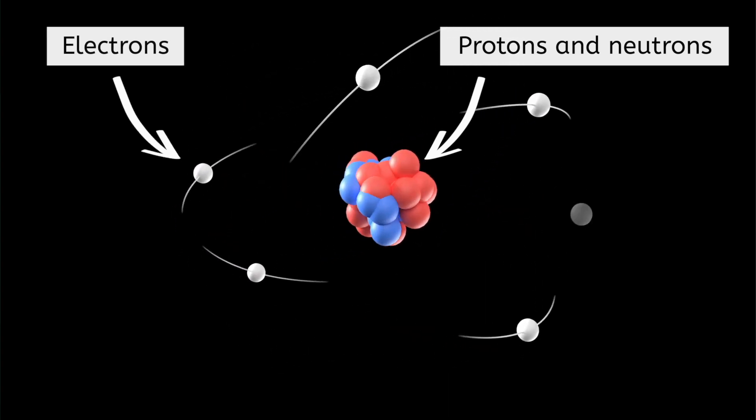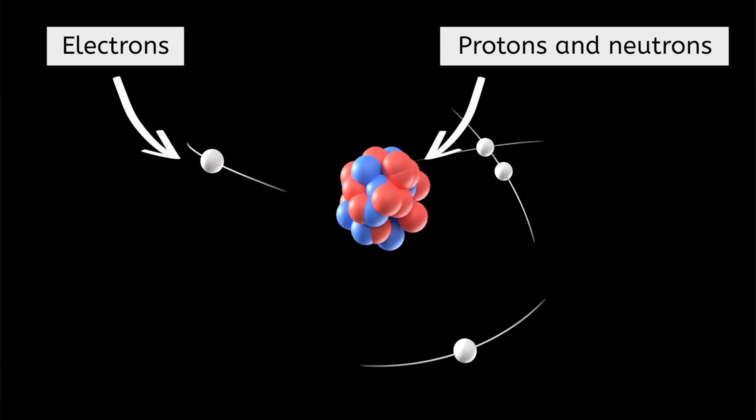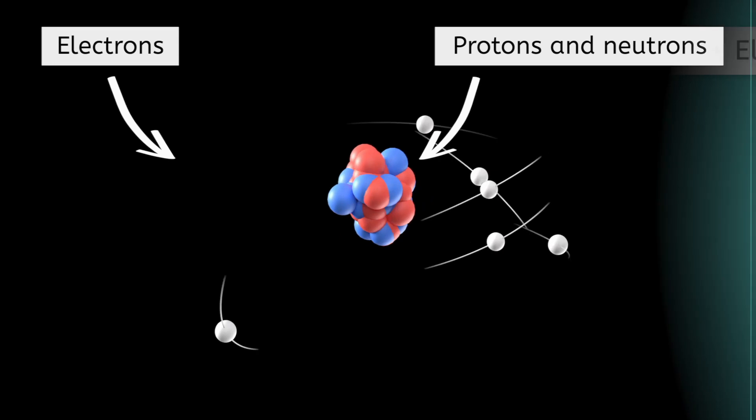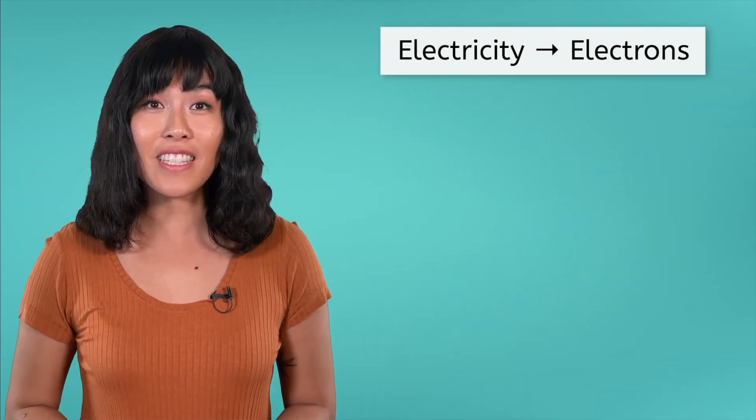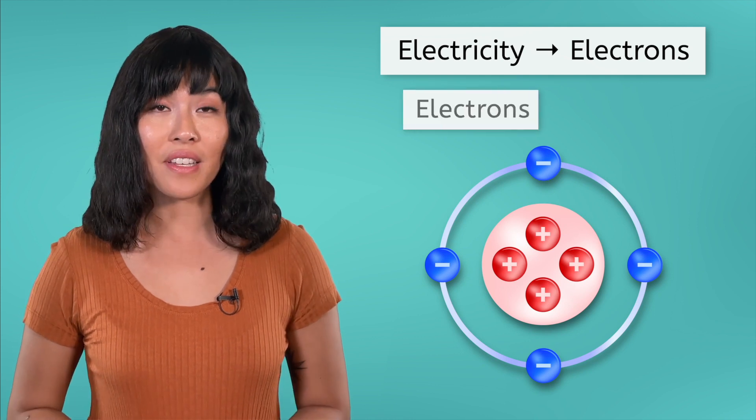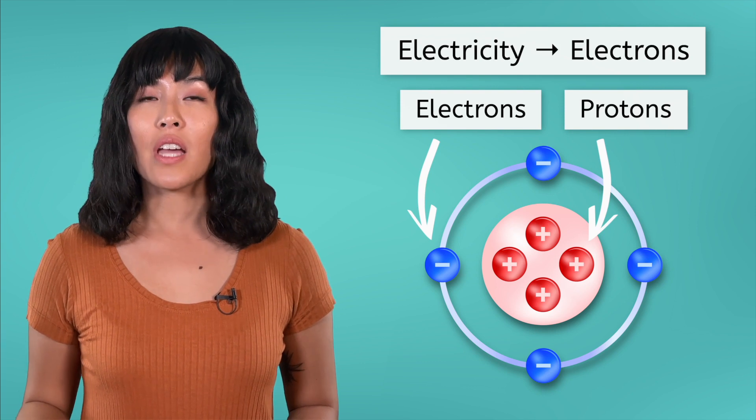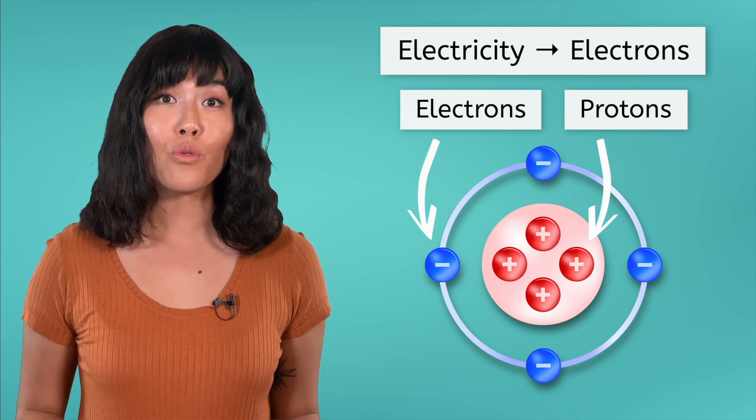Which of these particles do you think are involved directly in electricity? Do their names give you any clues? Electricity definitely involves electrons. And what charge do electrons have? Negative. Remember that protons have positive charge and neutrons are neutral with no charge.